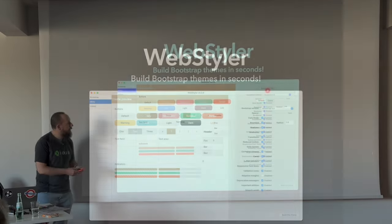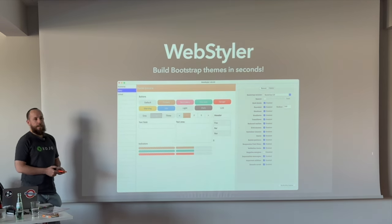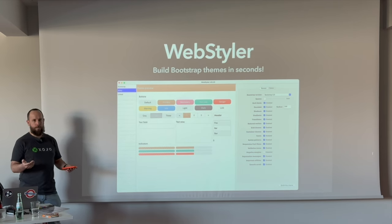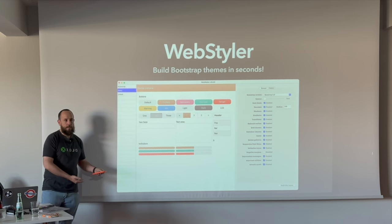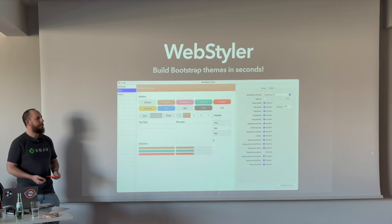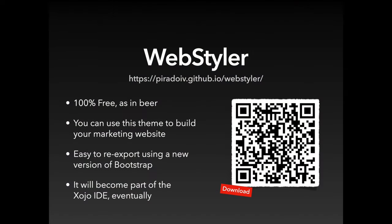As you can see here, you can select the Bootstrap version. So if Bootstrap creates a new version like Bootstrap 6, we will be able to add this new target. Without modifying your model, you will be able to export it again and just drop it into Soyo as usual. It's completely free. This is not the final goal — the goal is to eventually have all these settings integrated into Soyo IDE. But it's a little step forward into making web styles easier to create.